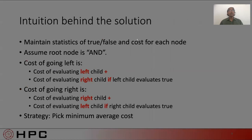So the intuition behind the solution is as follows. In the tree that we just saw, we maintain statistics for the costs and the outcomes, the outcomes being true or false, of each node. Now assume the root node is AND. We have two choices. We could go left or right. If we go left, we definitely pay the cost of evaluating the left child. And if the left child evaluated true, we would pay an additional cost of the right child.